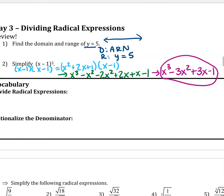Problem number two wants me to multiply x minus one by itself three times. I did two times first, just to make things a little easier for myself, and got this result. Then I added a third one — that's kind of how I like to break it down. The green shows after I multiplied two of them, and the purple should be your final answer.